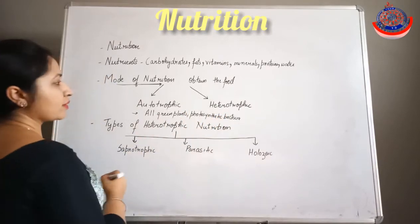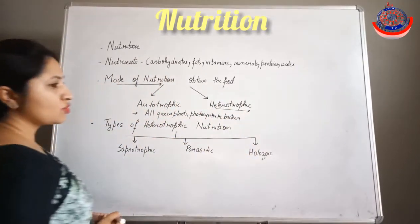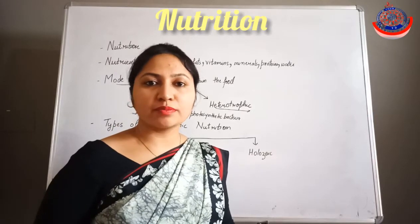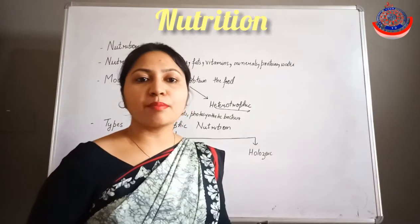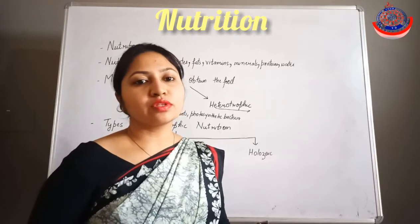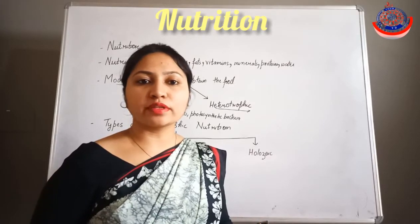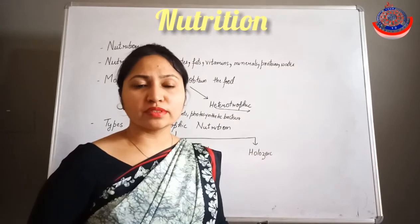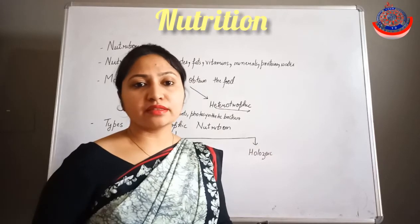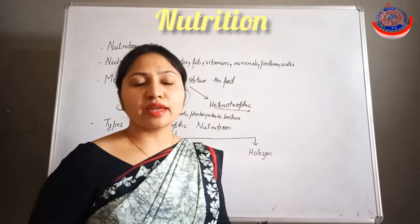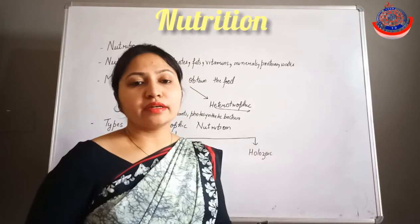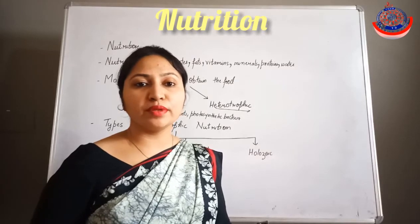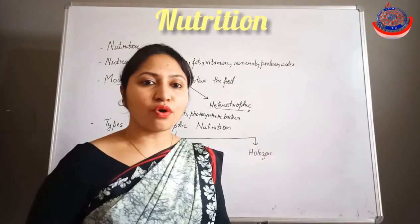Heterotrophic mode of nutrition involves heterotrophs, which cannot make their own food by photosynthesis and depend upon autotrophs for their food. Examples include parasites such as ticks, mites, tapeworms, and roundworms, as well as decomposers, and other organisms like cats, dogs, lions, deer, and human beings.